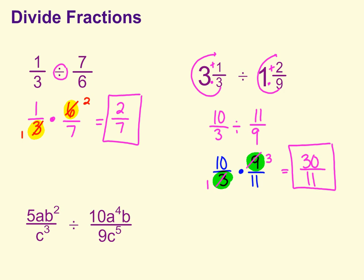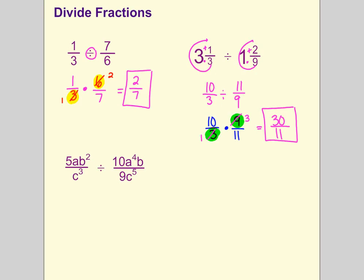Alright, now we have an algebraic fraction. We see that it's division, so our first step with division is to rewrite the problem. We're going to keep the first fraction the same, 5ab squared over c cubed. Change the division to multiplication. And then flip the second one, so 9c to the 5th over 10, a to the 4th, b.